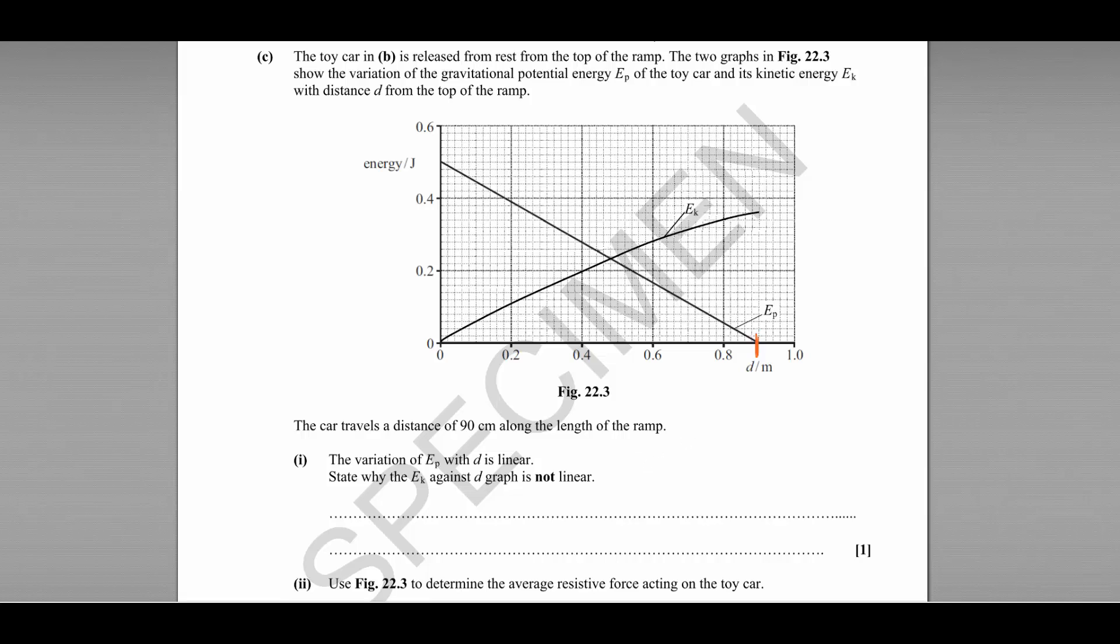The first part asks us why the kinetic energy against D graph is not linear. This is because friction and drag are doing work against the car's motion. So we have gravitational potential energy being converted into heat and kinetic energy. Not all of the GPE is being converted into kinetic energy.